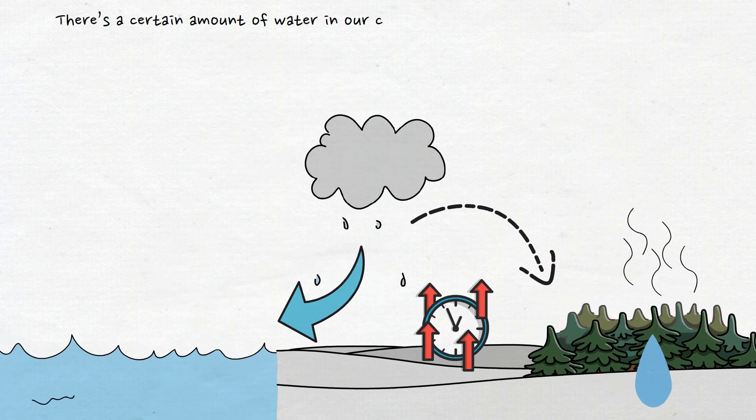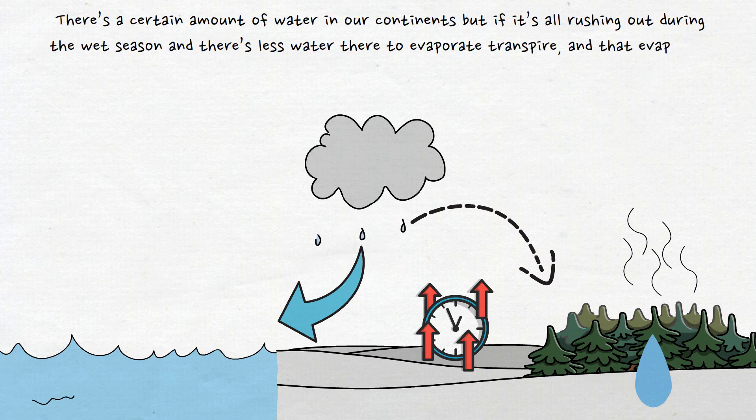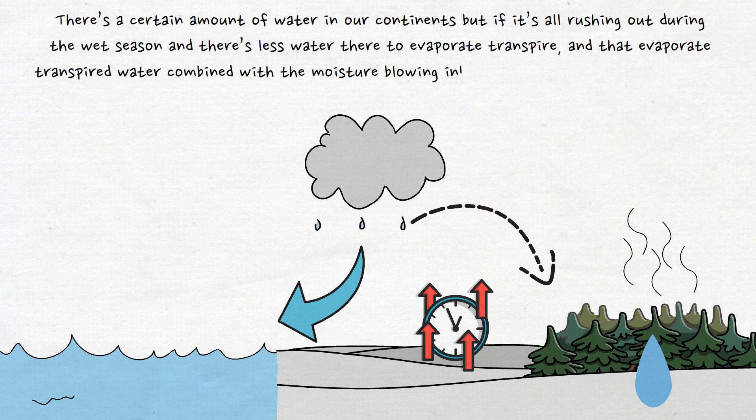And that evapotranspired water combines with the moisture blowing inland from the ocean to create rain, so you're going to affect the amount of rain on the land.